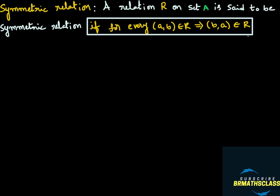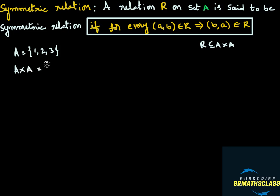It is easy to understand through example. So we will try to understand the symmetric relation definition with an example. I will take set A equal to {1, 2, 3}. R is a relation on set A. When we say R is a relation on set A, if R is a subset of A cross A, then we say that R is a relation on set A. I want to write A cross A here to understand what is a relation on set A.